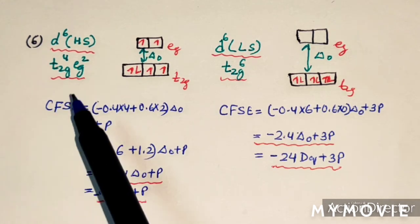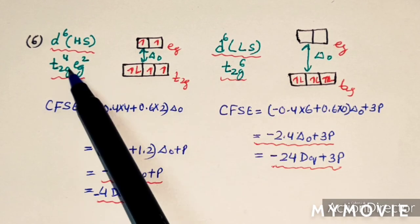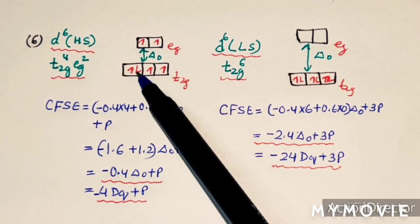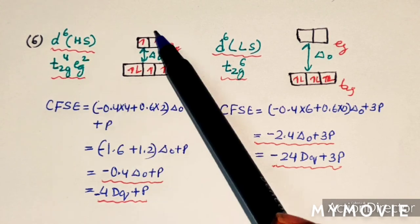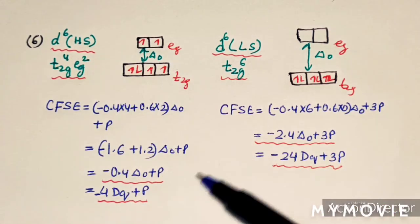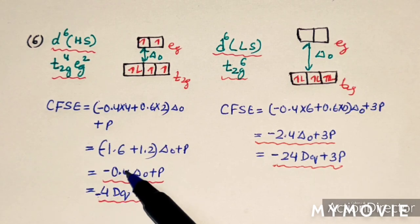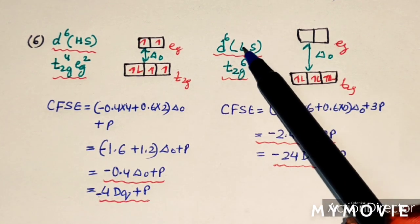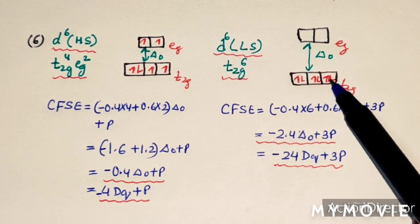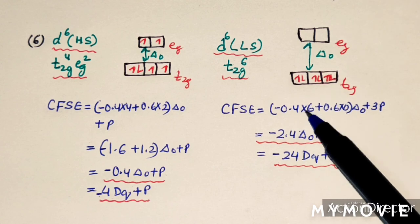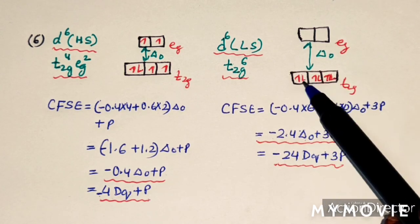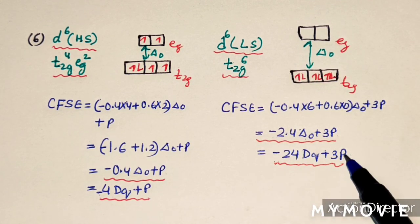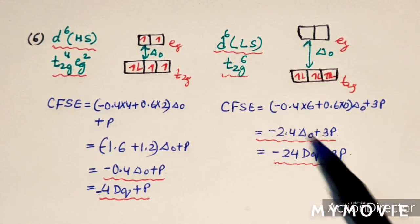For D6 high spin, electrons fill giving T2G4EG2 configuration. CFSE = −0.4 delta O + P or −4 DQ + P. For D6 low spin, all 6 electrons are in T2G giving T2G6. CFSE = 6×(−0.4) × delta O + 3P = −2.4 delta O + 3P, or −24 DQ + 3P, with three paired electrons.